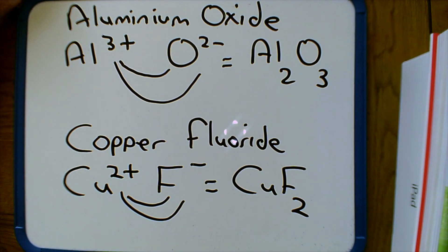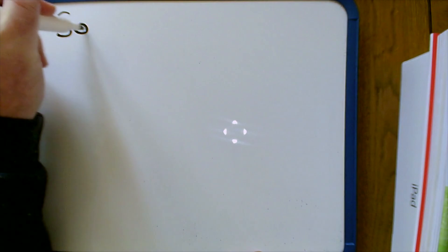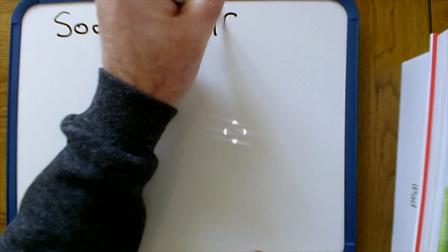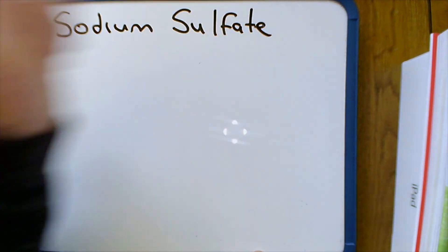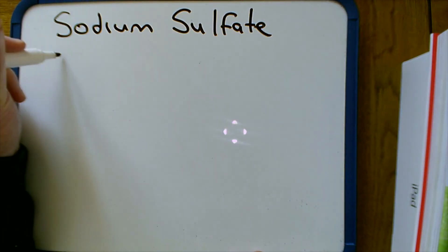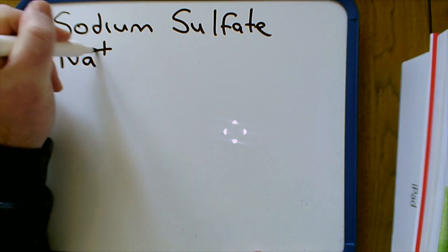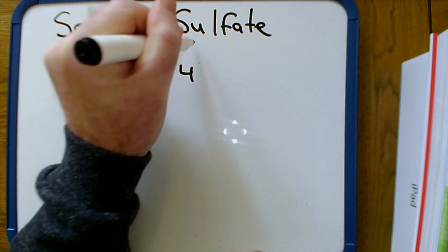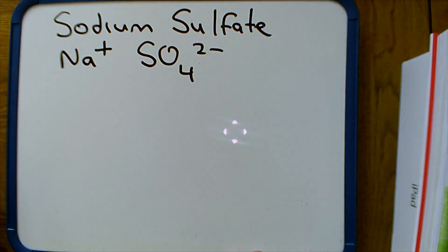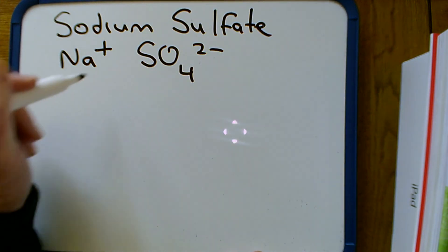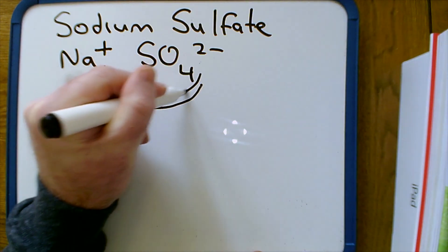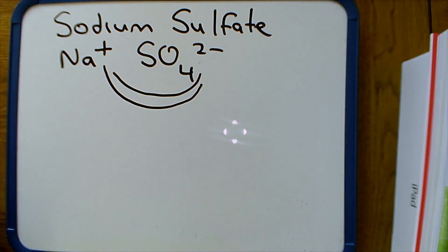In this last set of examples, we have compounds made up of molecular ions with different charges. For sodium sulfate: sodium has a 1+ charge, Na+, and the sulfate ion is SO4 2−. We would need two Na+ to cancel out the SO4 2−, so the formula is Na2SO4. Using the swapping method: the 2 swaps with the 1, giving Na2SO4.